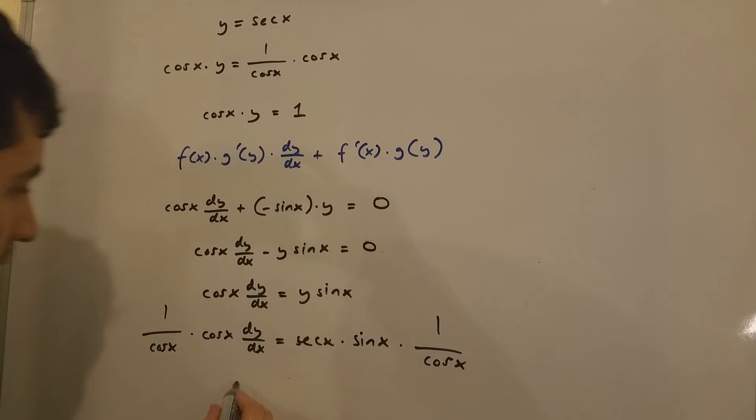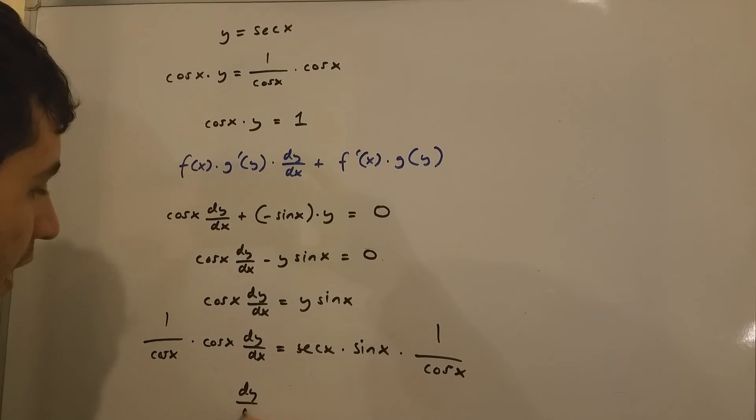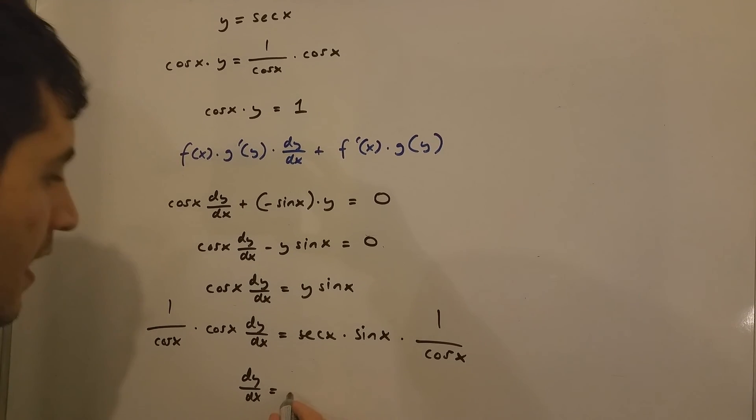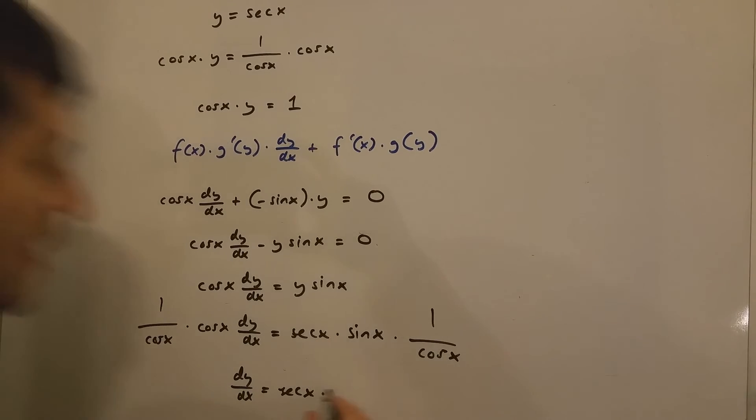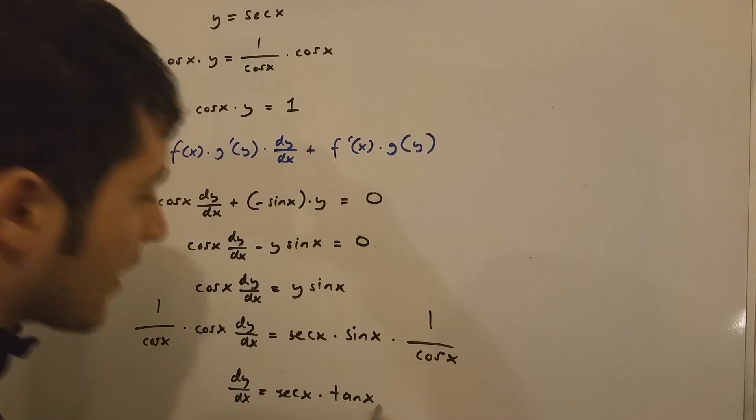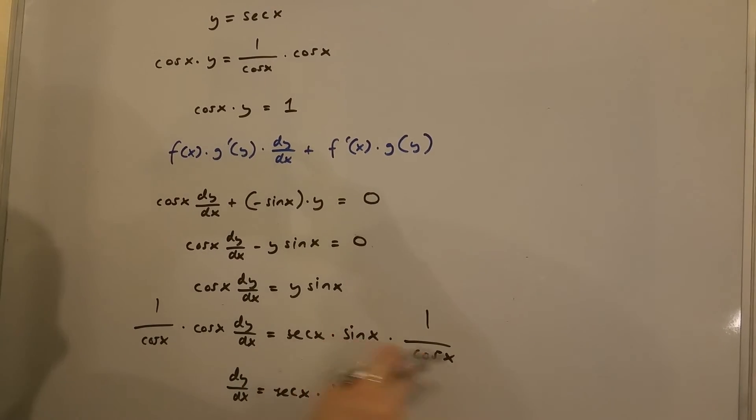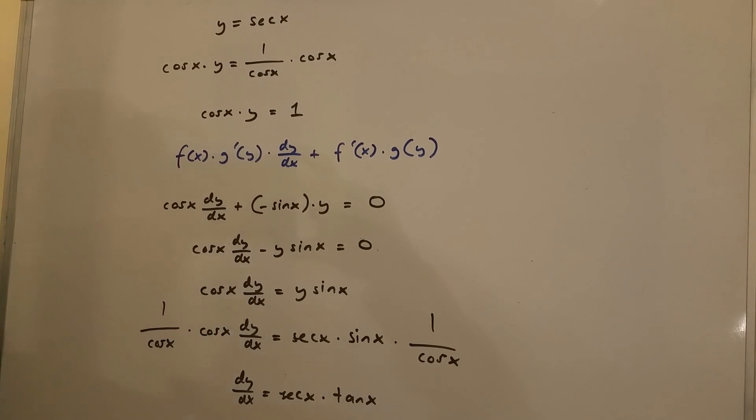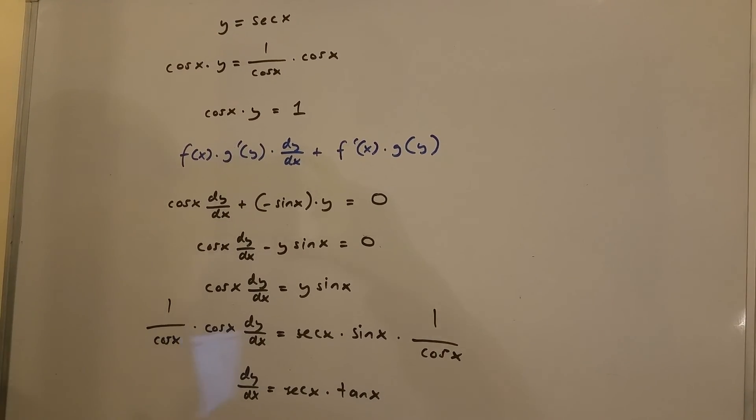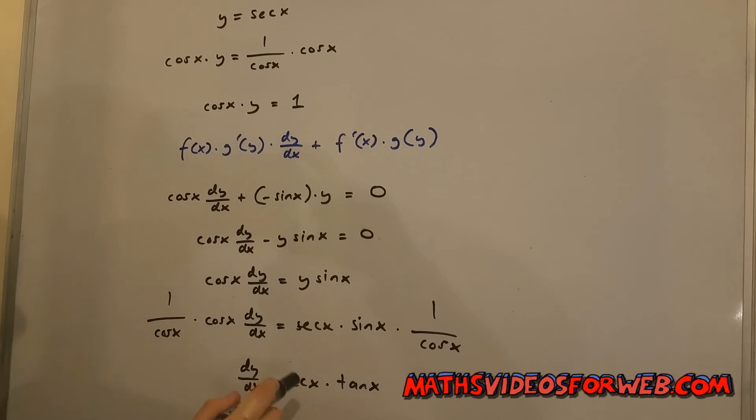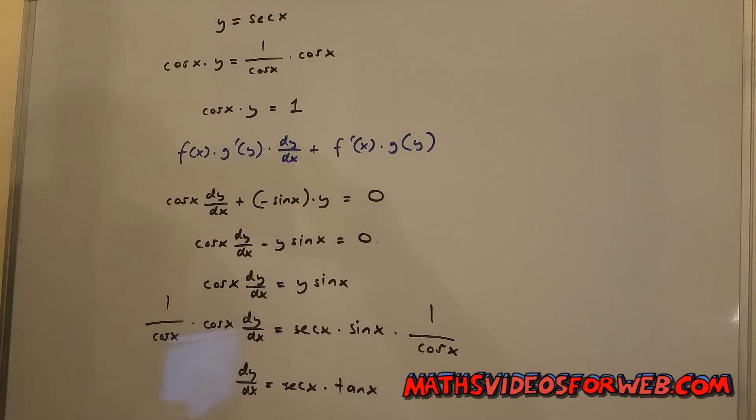We are going to be left with dy over dx is sec x multiplied by tan x, as sine x over cos x is tan x. So if y equals sec x, dy over dx is sec x multiplied by tan x.